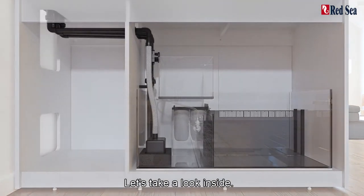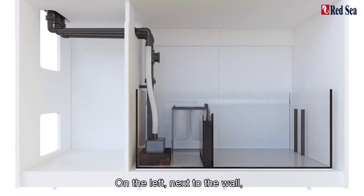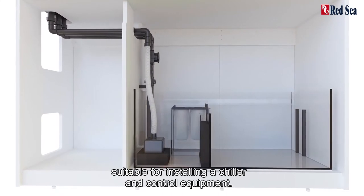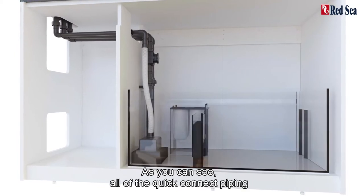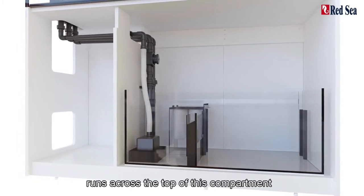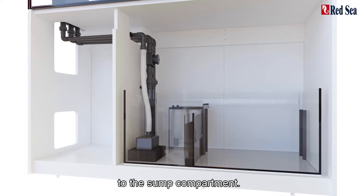Let's take a look inside. On the left, next to the wall, is a ventilated compartment suitable for installing a chiller and control equipment. As you can see, all of the quick connect piping runs across the top of this compartment to the sump compartment.